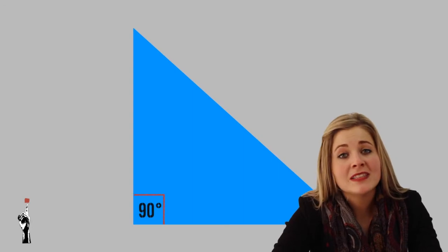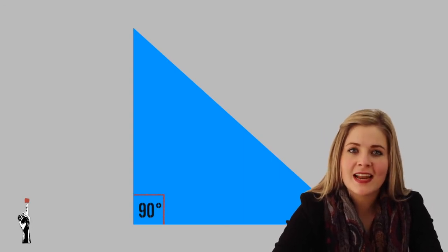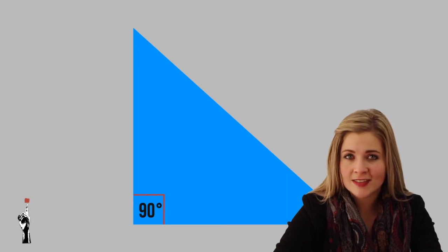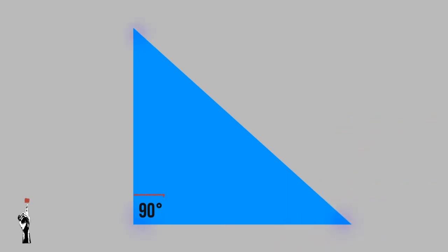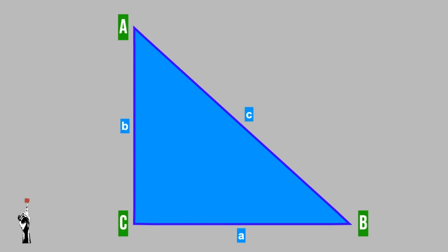Before we can start with Pythagoras' theorem, we first need to understand how to name sides and angles. When we have vertices, we write them in capital letters — capital letter A, B, or C. When we connect them, we have sides. For sides, we use small letters, not capital letters: small letter A, B, and C.